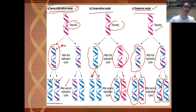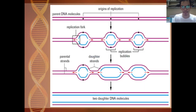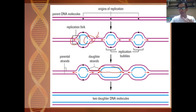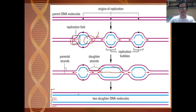The model we will follow is the semi-conservative model of DNA replication. As the replication fork goes on both sides of the parental DNA, it elongates and eventually connects to the other strand. After several rounds of replication, there are now two sets of DNA, each completely complementary to each of the parental DNA strands.